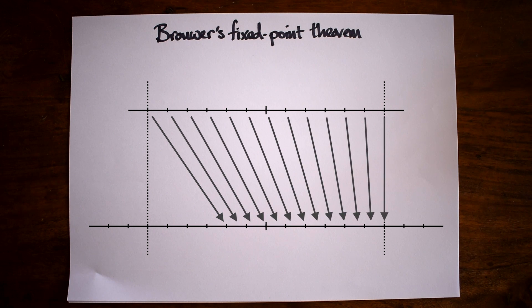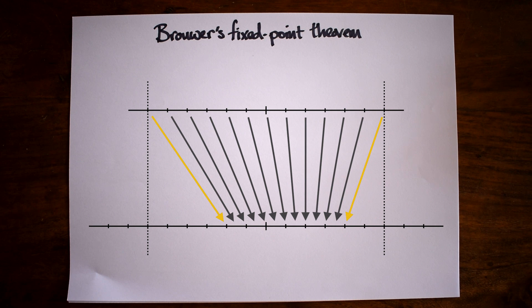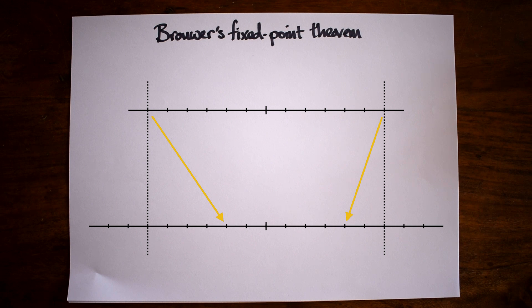Unless we choose a transformation with a fixed point on the boundary, this is always going to be true. As we move from the left boundary to the right, the arrow needs to move from pointing right to pointing left, and if it does so continuously,